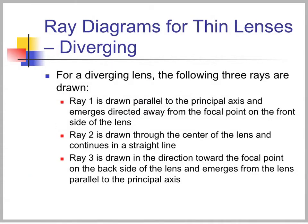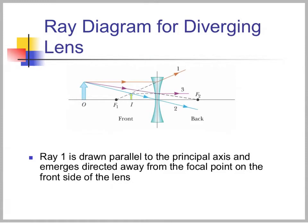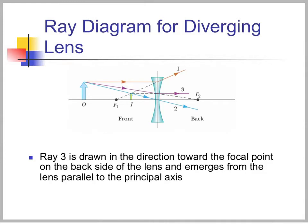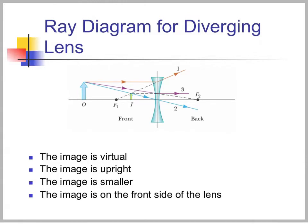For diverging lenses, ray one is drawn parallel to the principal axis and emerges directed away from the focal point on the front side of the lens. Ray two goes through the center of the lens and continues in a straight line. Ray three is drawn toward the focal point on the back side and emerges parallel to the principal axis. The three diverging rays appear to come from a single point — the virtual image. The image is virtual, upright, smaller than the object, and on the front side of the lens.